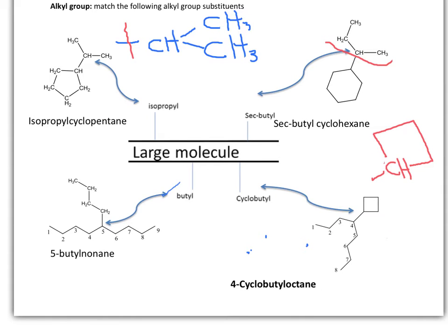To practice some more, we have a cyclopentane with a substituent. One of the hydrogens has been removed, and now we see that it is substituted with the isopropyl group, so the name of the compound is isopropylcyclopentane. We also see that a cyclohexane has a cyclobutyl alkyl substituent. Do not forget that we have one hydrogen left right here. Now to compare, we have a primary alkyl group from butane, and that is butyl.